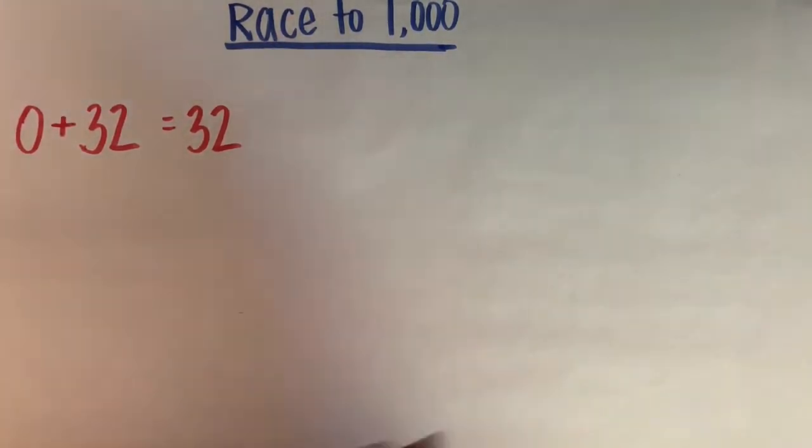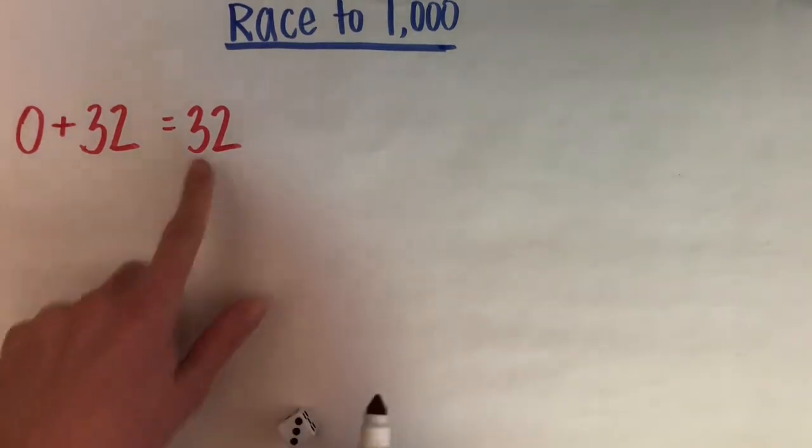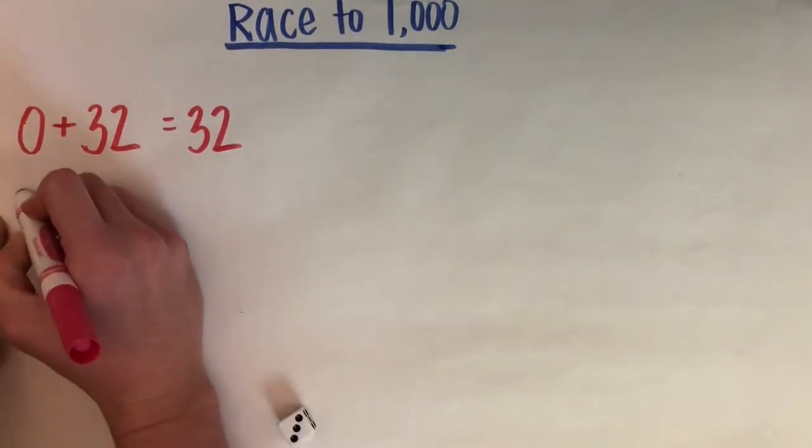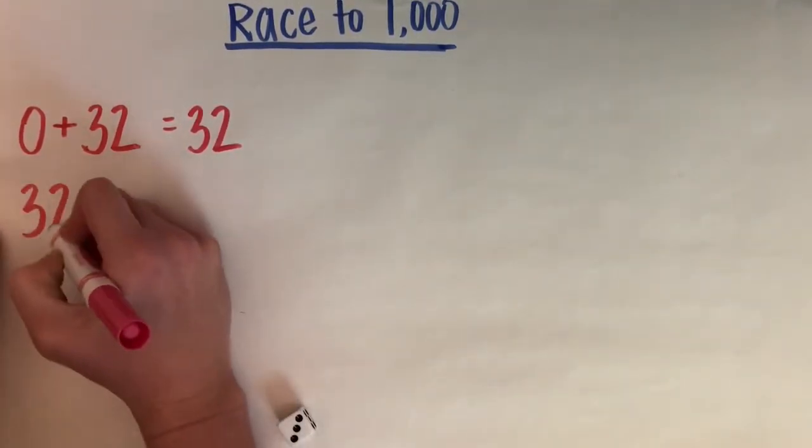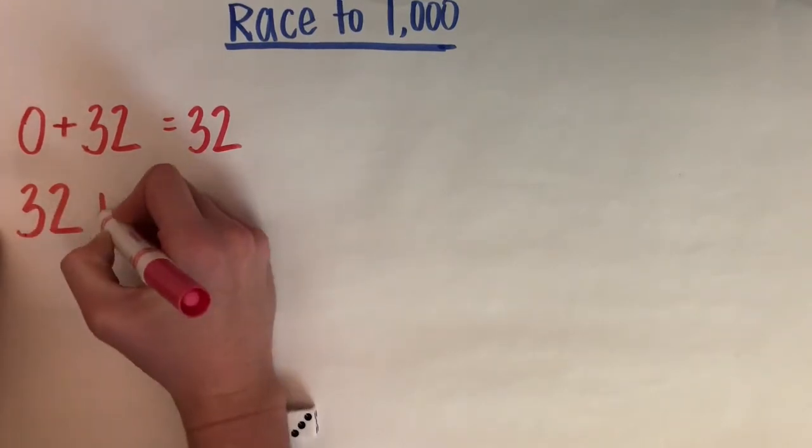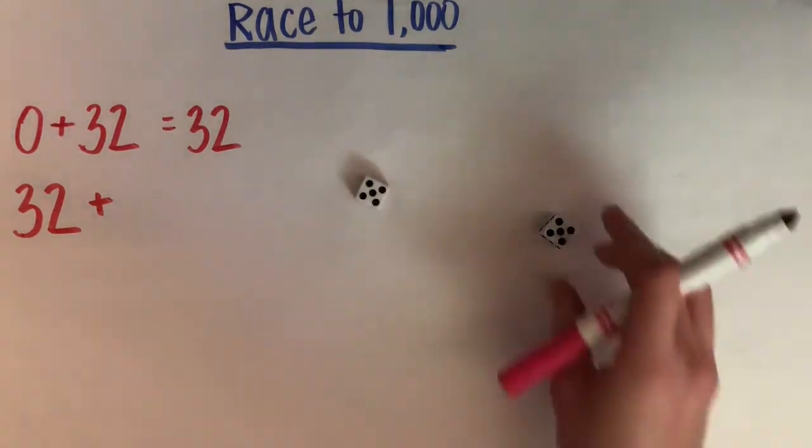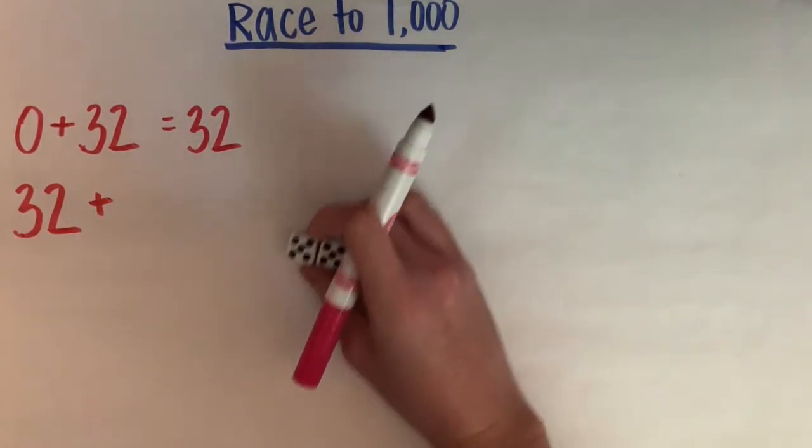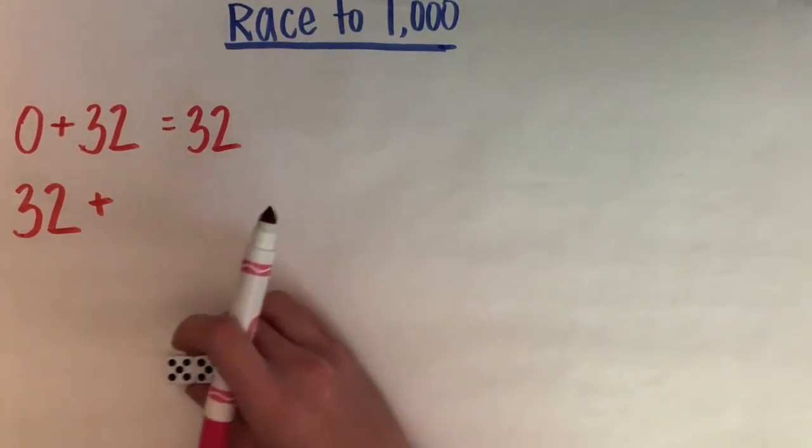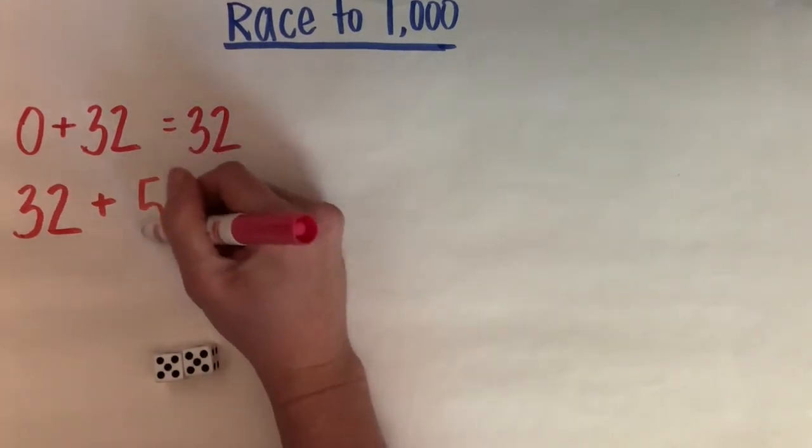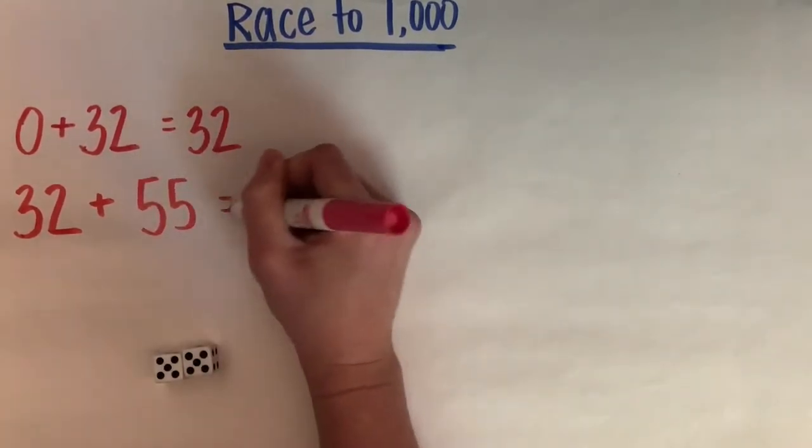On my next turn I'm going to start with this number, this answer that I got in my first equation. So I'm going to start with 32 and I'm going to add... okay so I got 5 and 5, or 55. So I'm going to add 55 to 32.